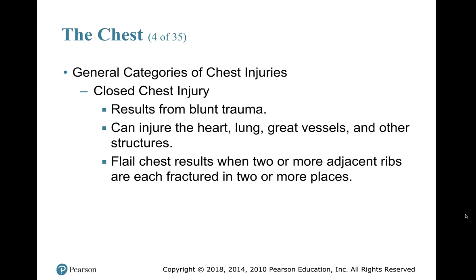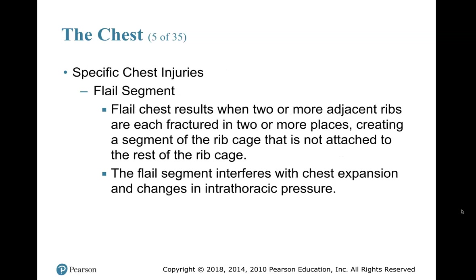A closed chest injury results from blunt trauma and can injure the heart, lungs, great vessels, and other structures. Flail chest results when two or more adjacent ribs are each fractured in two or more places. The flail segment is created when those ribs are fractured into more places, creating a segment of the rib cage that is no longer attached to the rest of the rib cage. The flail segment interferes with chest expansion and changes the intrathoracic pressure.